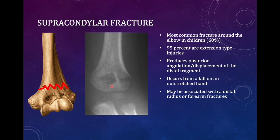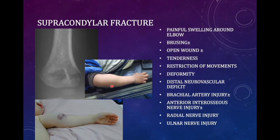The mechanism of injury is a fall on an outstretched hand, common to all elbow injuries. It may be associated with other fractures because the injury can occur anywhere in the forearm, elbow, or arm. Clinical features include painful swelling around the elbow, bruising, open wound in severe injury, tenderness, restriction of movements, deformity, and distal neurovascular deficit.